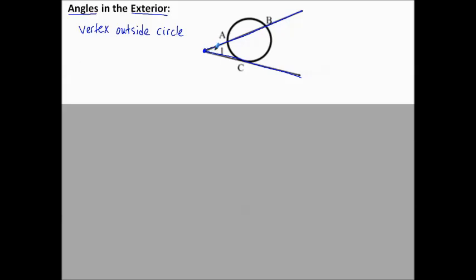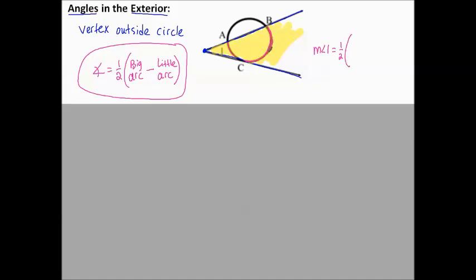For this one, shine a flashlight. Notice it also intercepts two arcs. There's an arc that's a really big arc, and there's an arc closer that's a smaller arc. This time, we say that the angle is half of big arc minus little arc. And we memorize that. Why big minus little? Because we want a positive measure for the angle. So in this picture, the measure of angle one is equal to half of the bigger arc, this one that's farther away, BC, minus the closer one, AC.